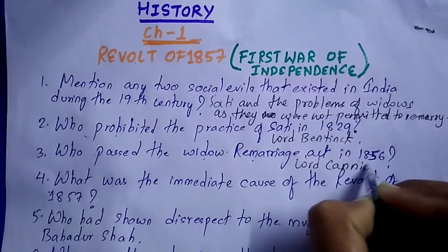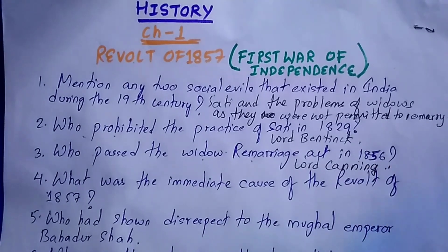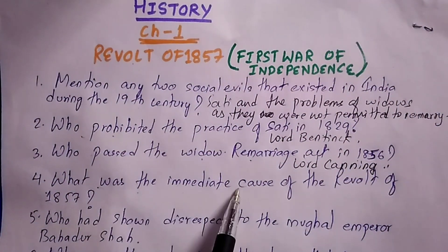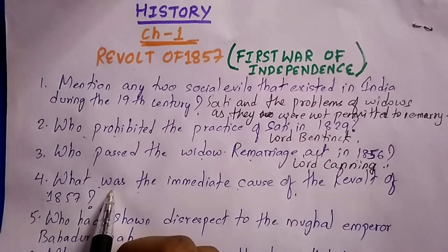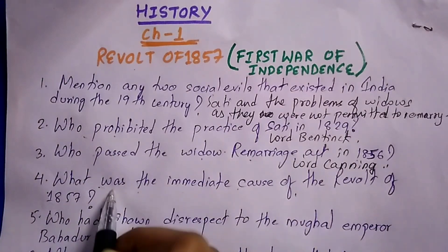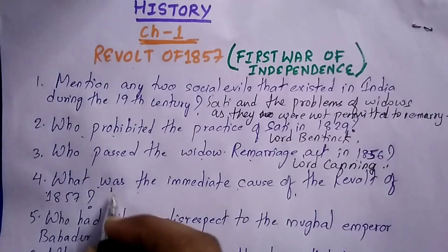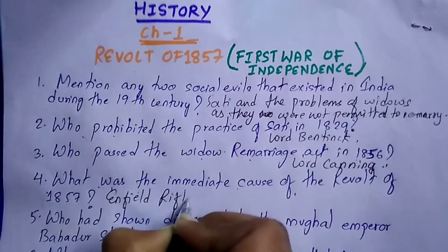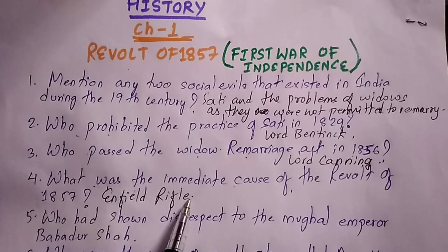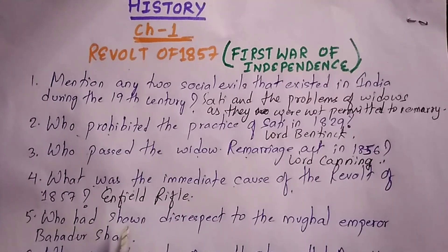Question four: What was the immediate cause of the Revolt of 1857? The immediate cause of the Revolt of 1857 was the Enfield rifle. The British government introduced the Enfield rifle in the Bengal army, and in 1857 a rumor spread that the cartridges of the Enfield rifle were greased with the fat of pig and cow.